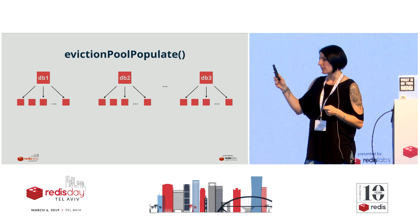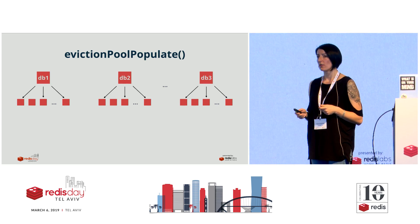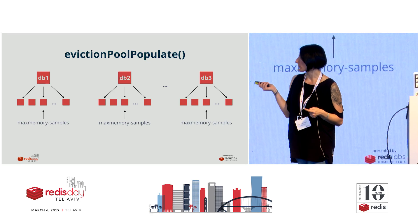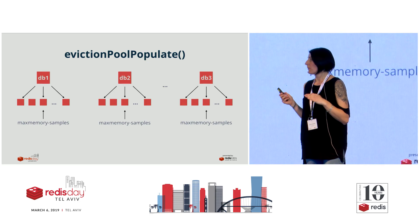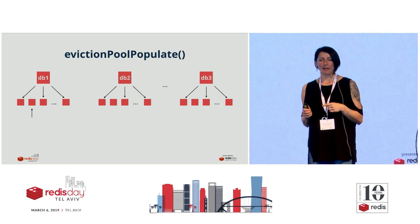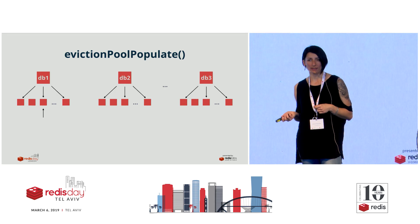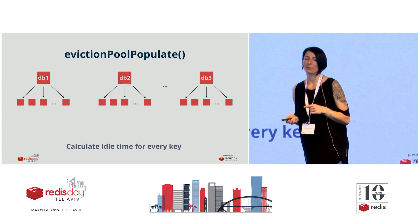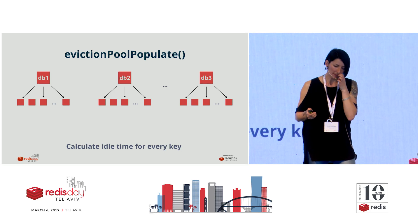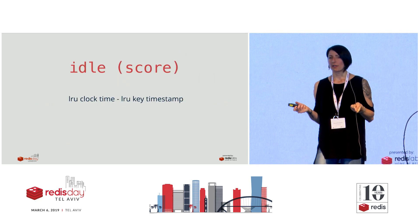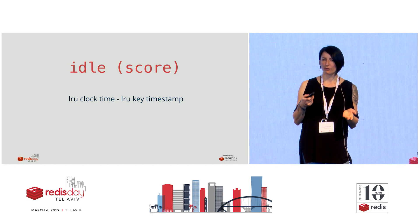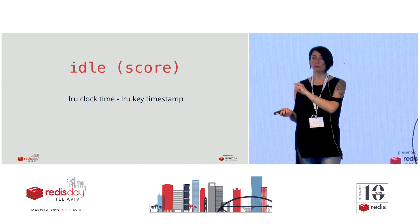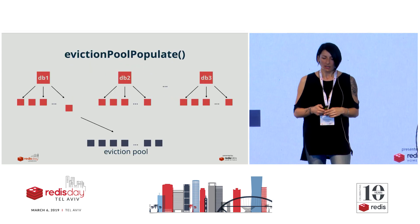We would start looping through all the databases, and from every database we are going to get X keys, where X is specified in max memory samples. For every key, we are going to calculate its idle time - or the score; it's called idle but it's actually a score, and I'll explain later why, because it's used for LFU and for volatile-TTL too. How are we calculating the LRU idle time? Simple: just get the current LRU clock and subtract from it the LRU key timestamp - the one in those 24 bits we previously talked about.